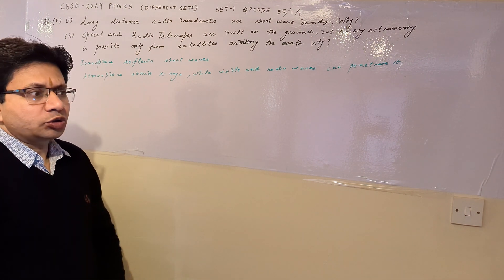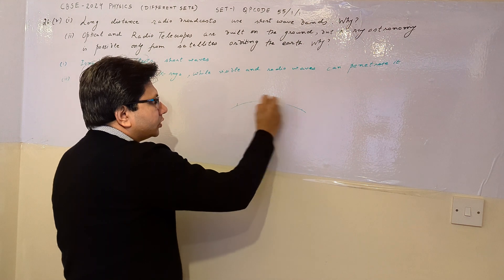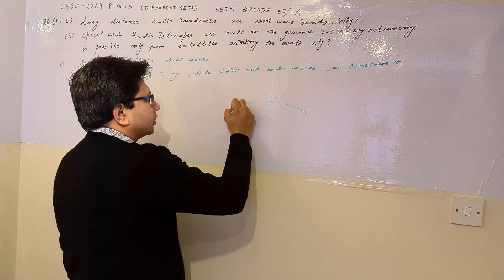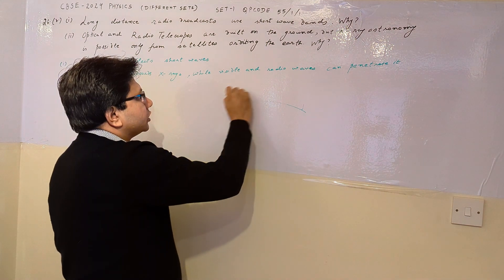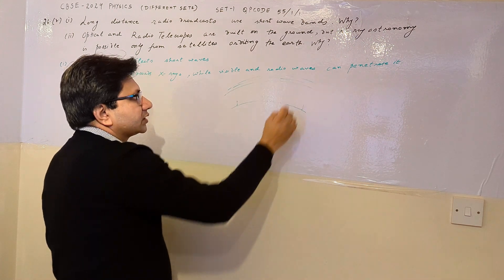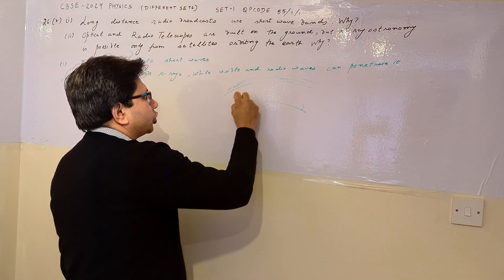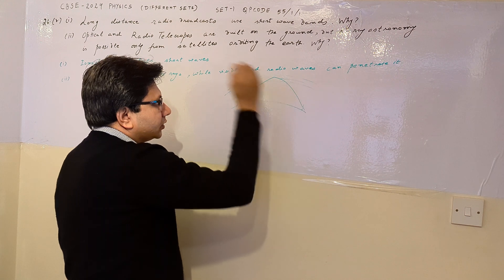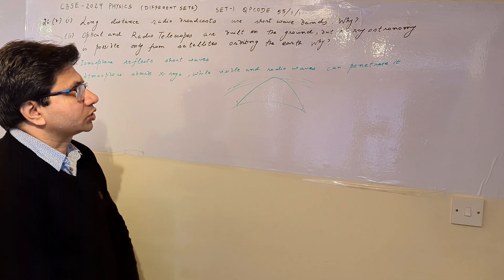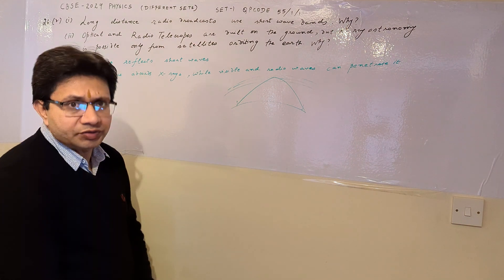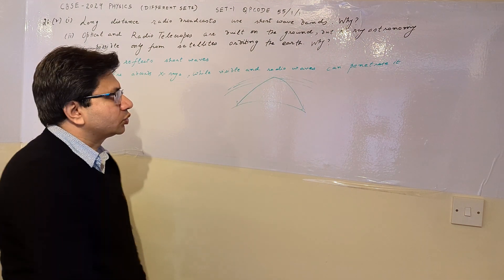For the first question: suppose we want to transmit a signal from one place to another. Due to the curved nature of the earth, we cannot transmit the signal directly from one antenna to another. So we utilize the ionosphere — a particular layer of the atmosphere at a certain height. The shortwave goes up to the ionosphere and reflects back to the receiving station. Long distance radio broadcasts use shortwave bands because these are energetic waves that can reach the ionosphere and reflect back.